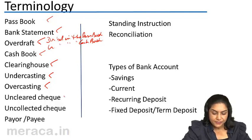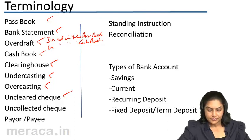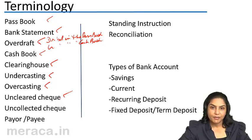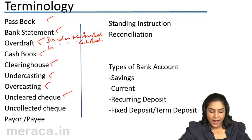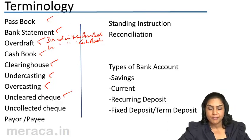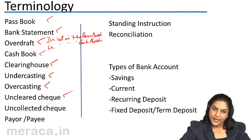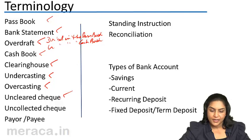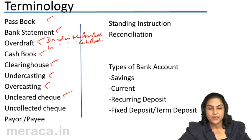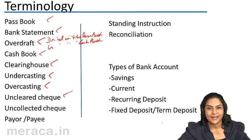An uncleared check is a check which is in the process of clearing and has not yet been cleared. While tackling problems of the bank reconciliation statement, an uncleared check usually refers to a check which has been issued but has not yet been cleared. An uncollected check, on the other hand, would mean a check which has been deposited but the funds have not yet come in, or the bank has not yet credited the account.